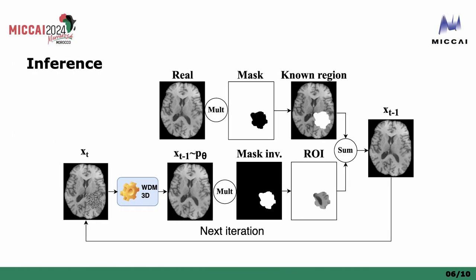For inference, only the inpainted region contains noise, and after each step, the known region is replaced by the real known region, keeping from the inference only the region of interest. This process is performed for a defined number of steps. We tested from 1000 up to 5000 steps.